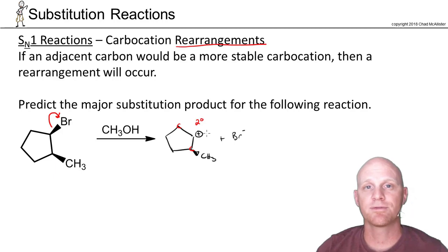Recall that carbocation stability increases with substitution: tertiary is more stable than secondary, secondary more stable than primary, primary more stable than methyl. If either adjacent carbon would be more stable than our current secondary carbocation, then a rearrangement would occur. One adjacent carbon is also secondary—equally stable, so no rearrangement there. But the carbon below is tertiary, which would be more stable.